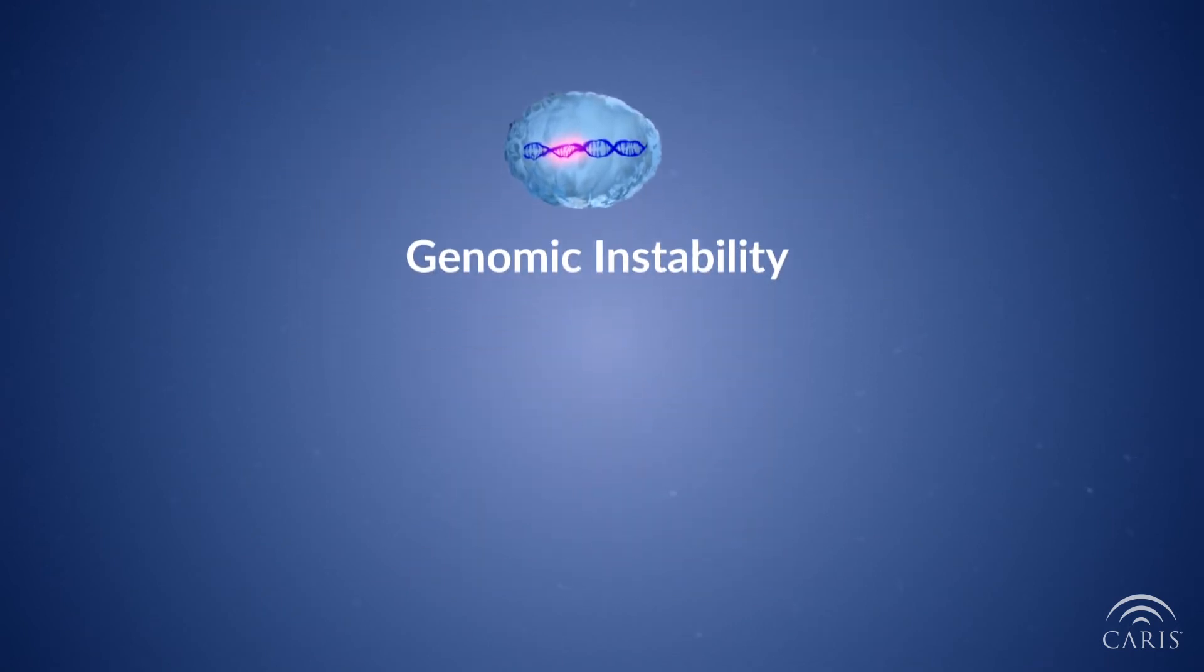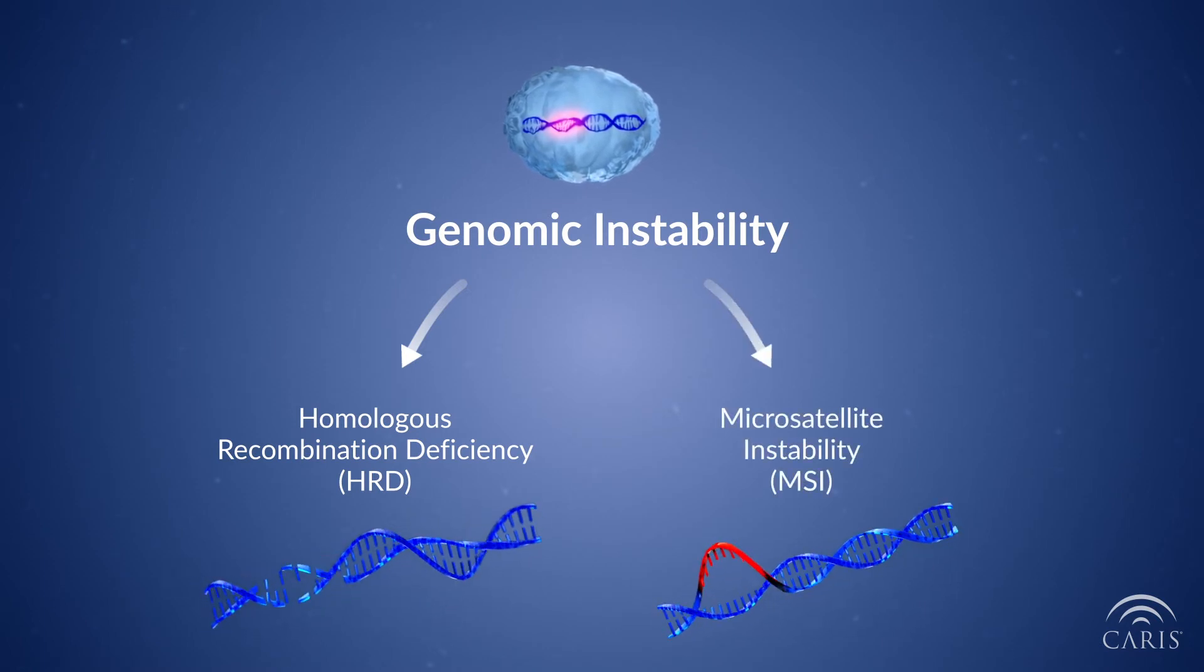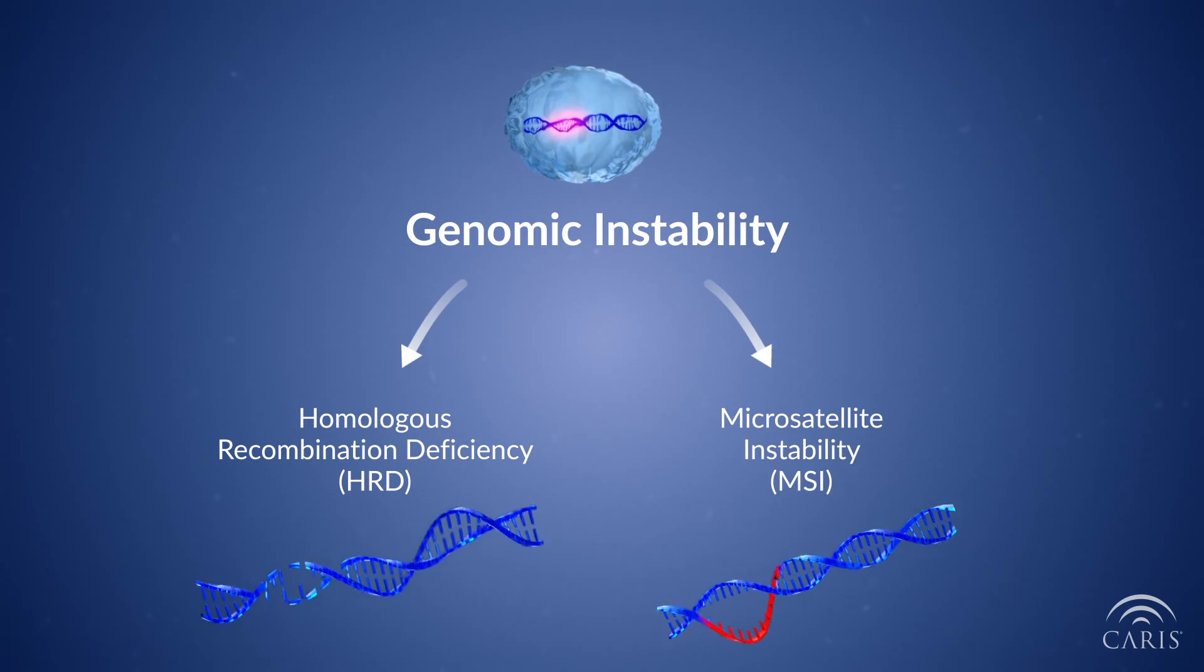Two common types of genomic instability are homologous recombination deficiency, known as HRD, and microsatellite instability, or MSI.